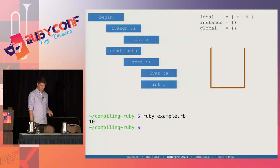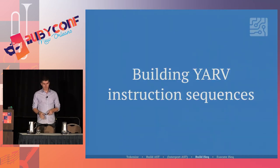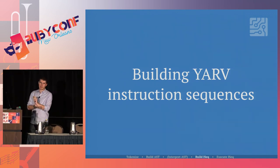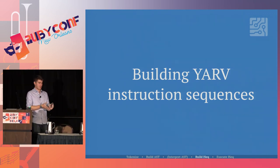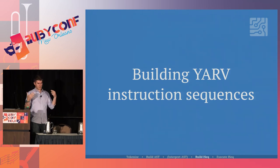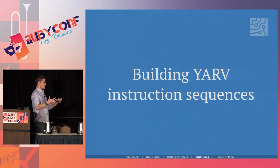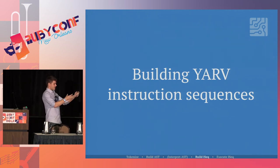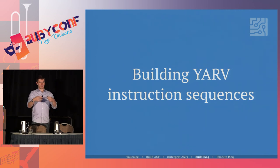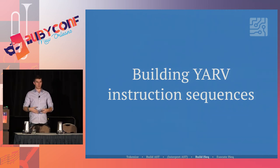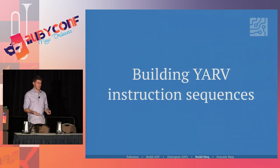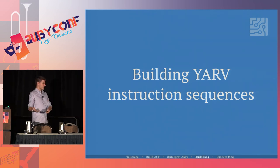So this was Ruby 1.8. Ruby 1.9 introduced YARV — I believe it stands for Yet Another Ruby Virtual Machine. YARV is a virtual machine. Instead of taking an abstract syntax tree and immediately interpreting it, it takes the abstract syntax tree, builds instruction sequences — much the same way you would build assembly from C. This is a compilation process, and it goes and executes those.